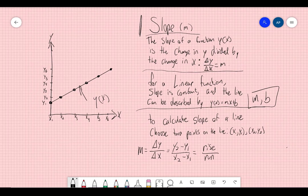To calculate slope, we have to choose two points on the line, some x1, y1, and some x2, y2, and we calculate the change in y divided by the change in x, that's delta y over delta x. And if you want to do it in words, I think about it like rise over run. So we find how much the function rises, and we divide it by how much it runs.